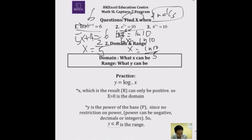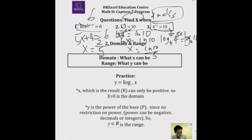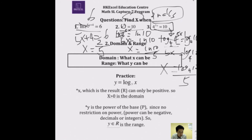Question 3: 4 to the power 5X equals 10. How do you do this? We use LN to eliminate e, but to eliminate the base 4, we take log to the base 4 of both sides. Same base and same result — cross them out. That leaves 5X equals log base 4 of 10, so X equals log base 4 of 10 over 5.